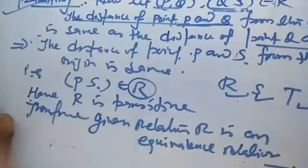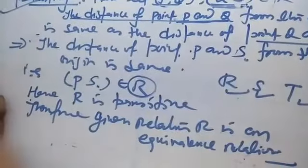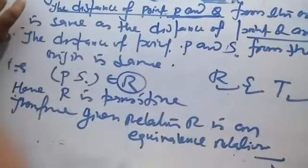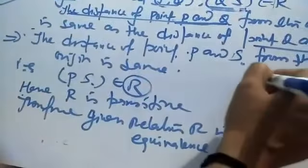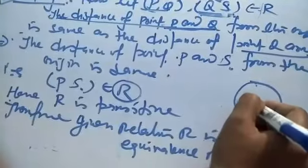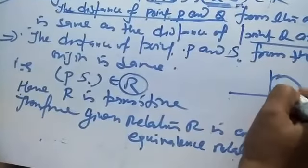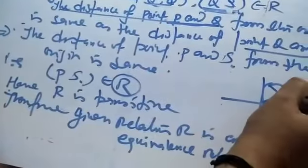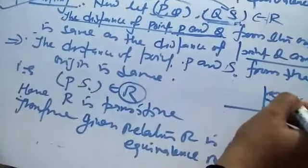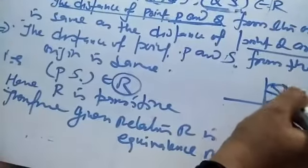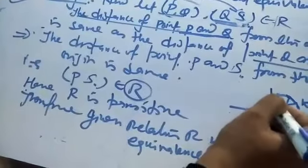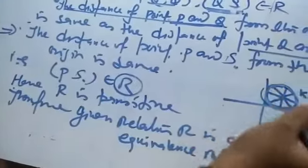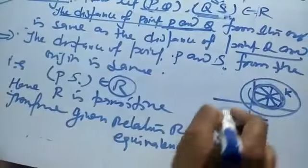Further, the set of all points related to point P, where P is not equal to (0,0), is the circle passing through point P with the origin as the center. All points on that circle are at the same distance from the origin, so they all belong to the same equivalence class. You can read it for more detail.